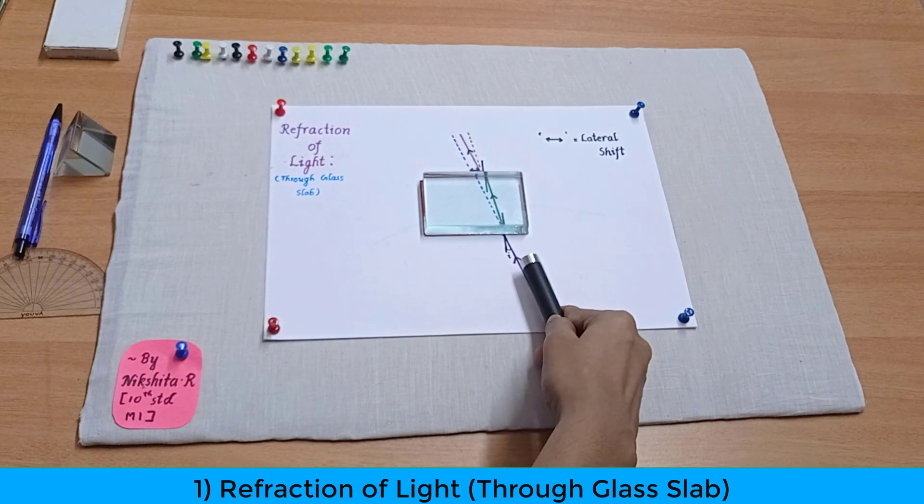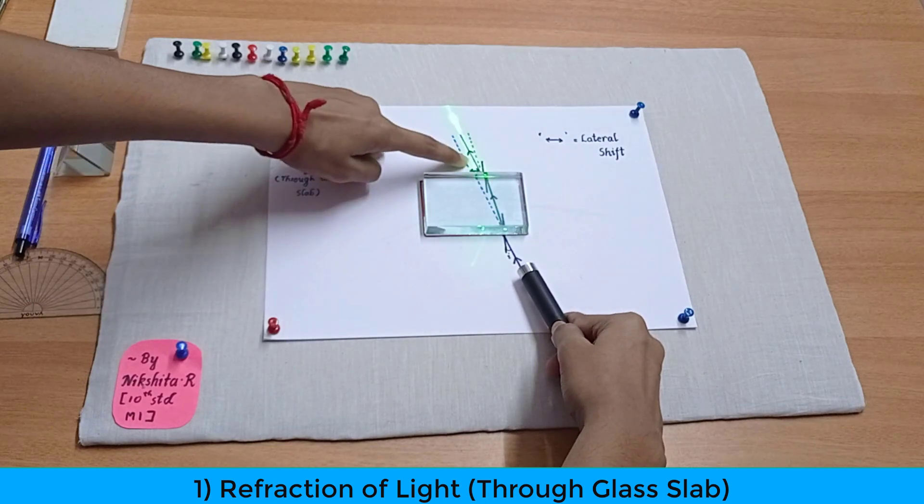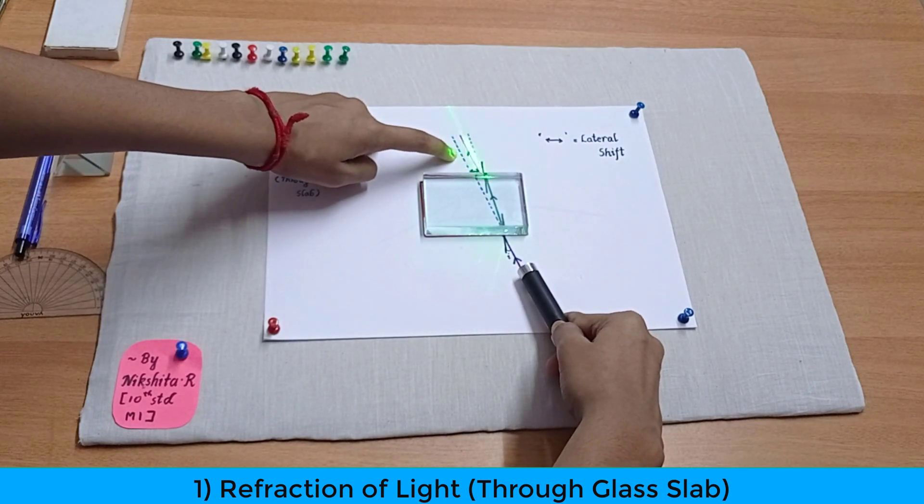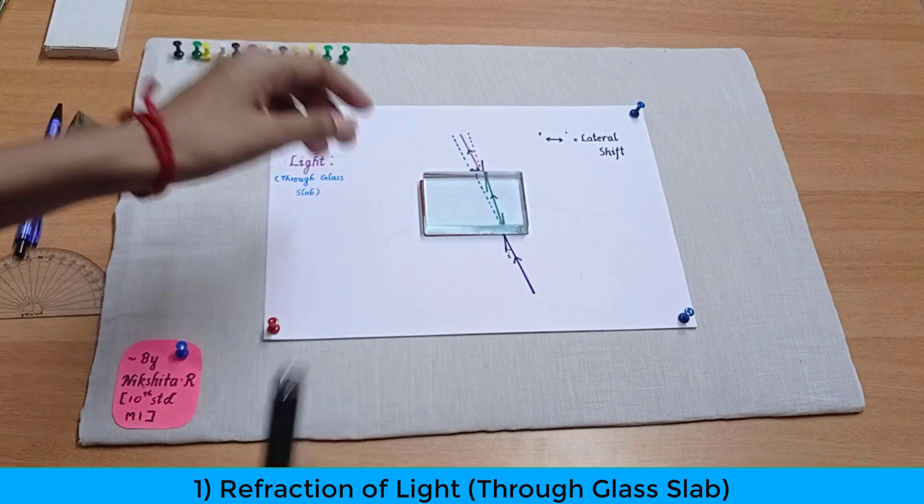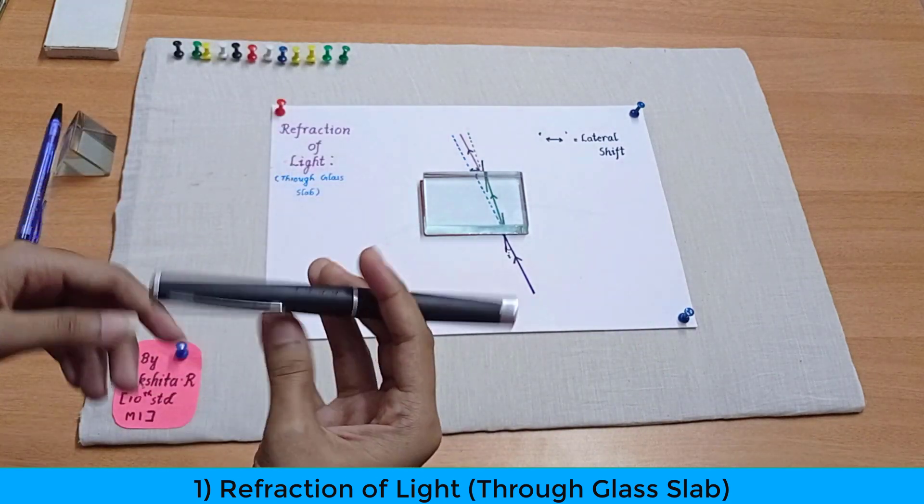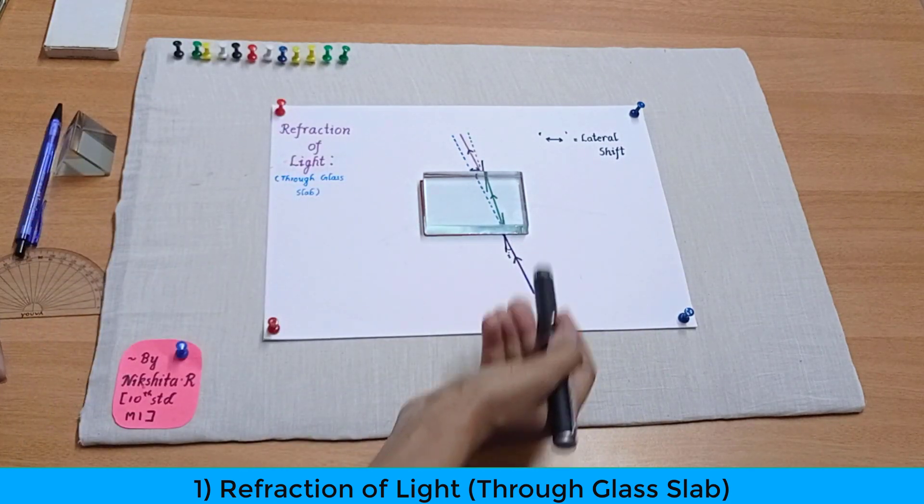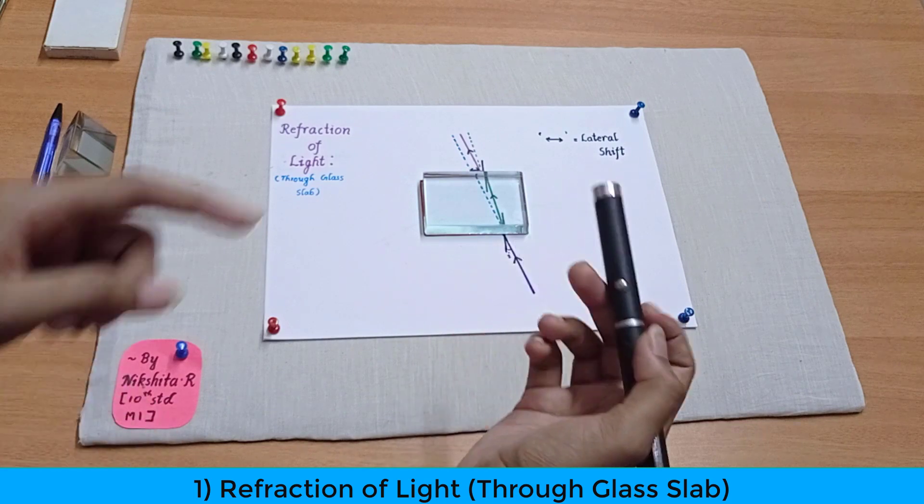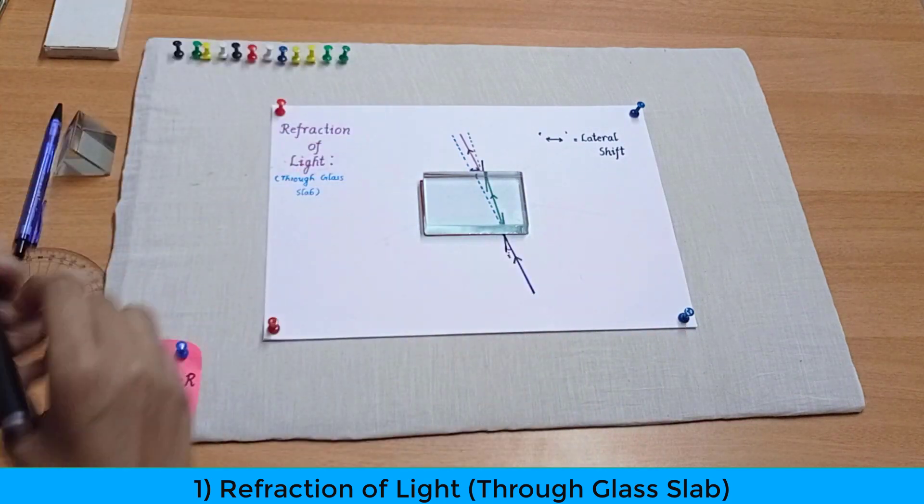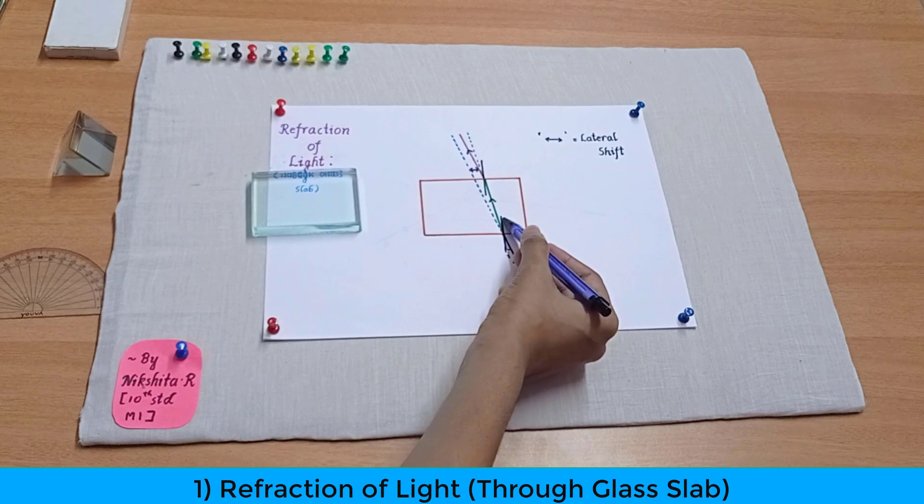So I'm leaving the incident ray over here like this and it's going over here and not in this line. Now why is this happening? That's because now first the light moves from a lighter medium to a denser medium that is from air to glass.